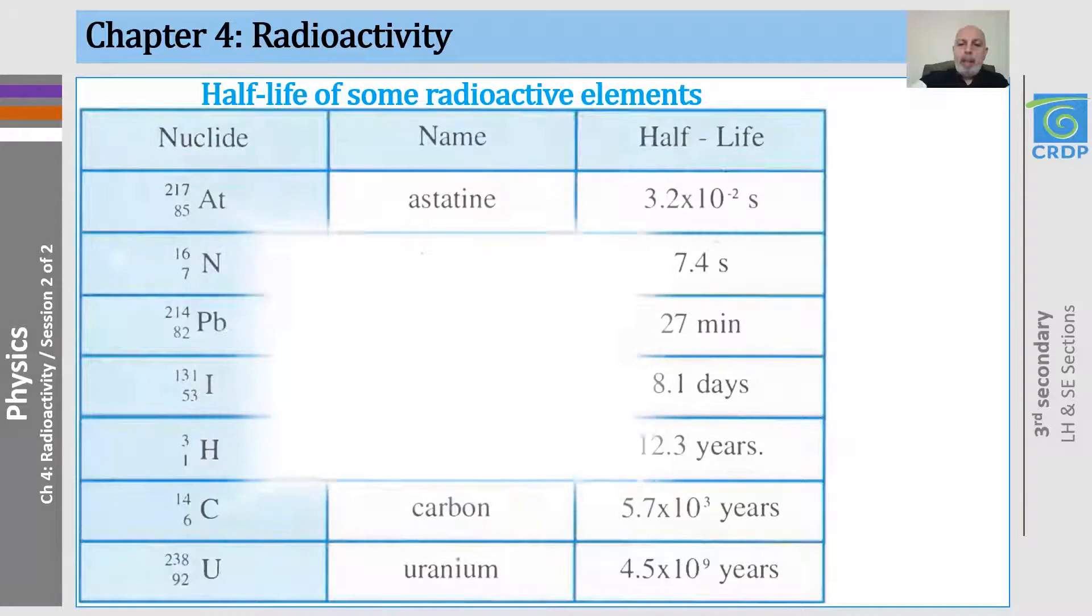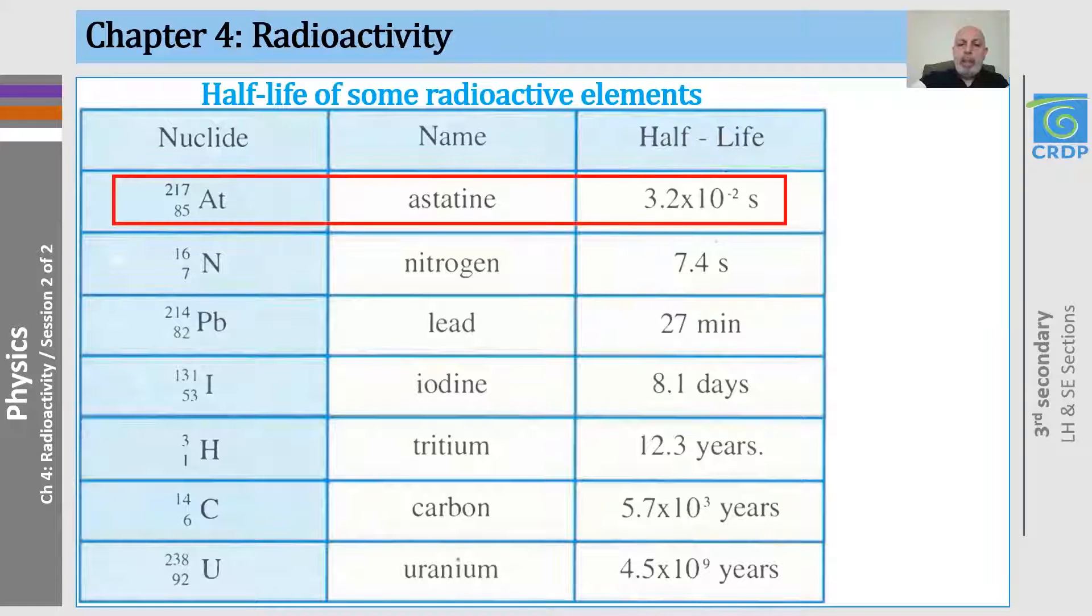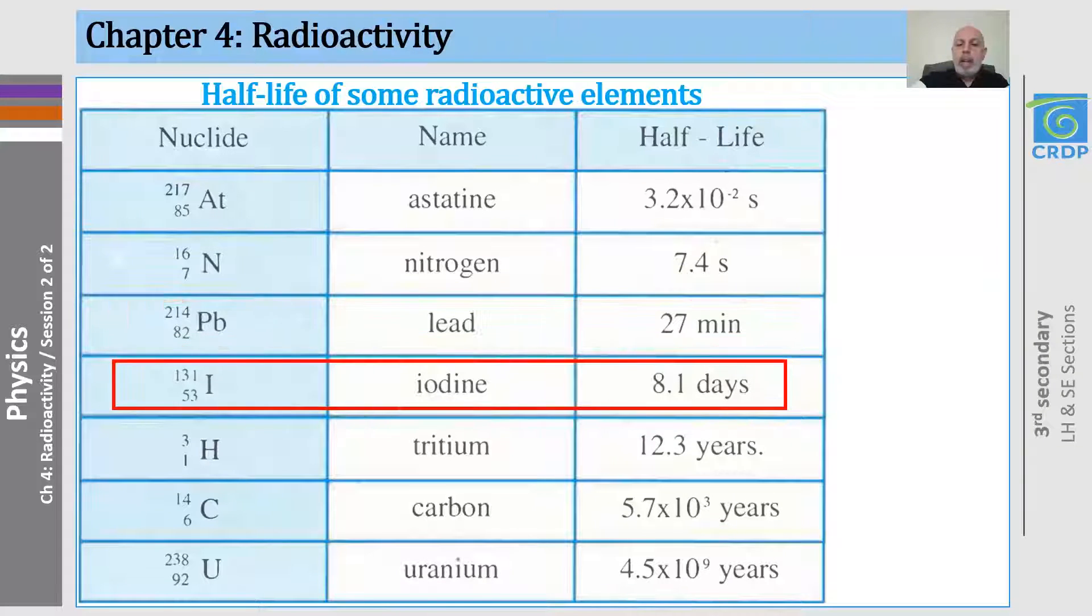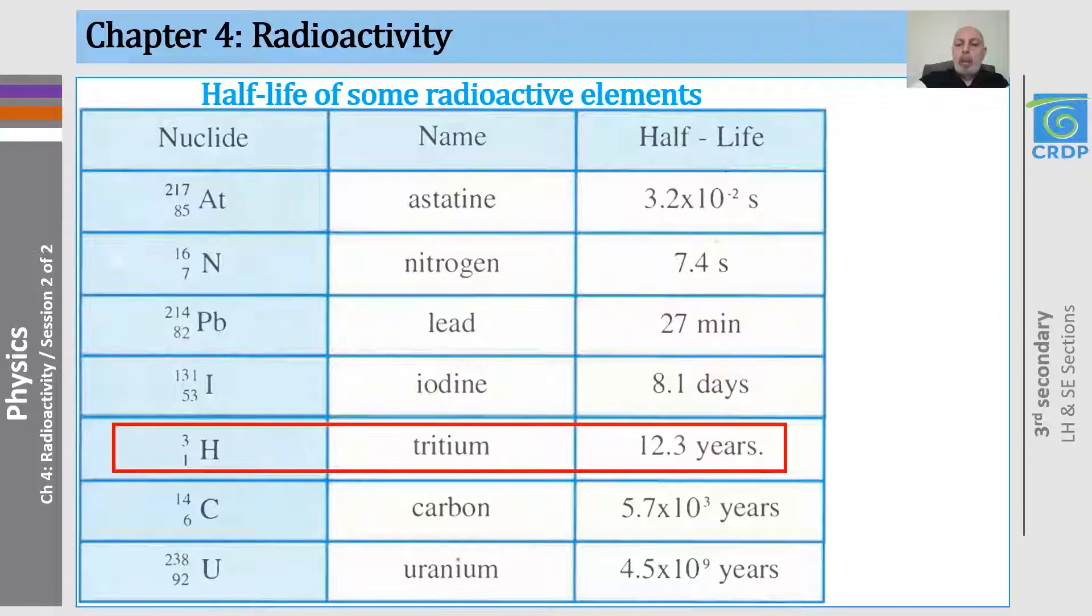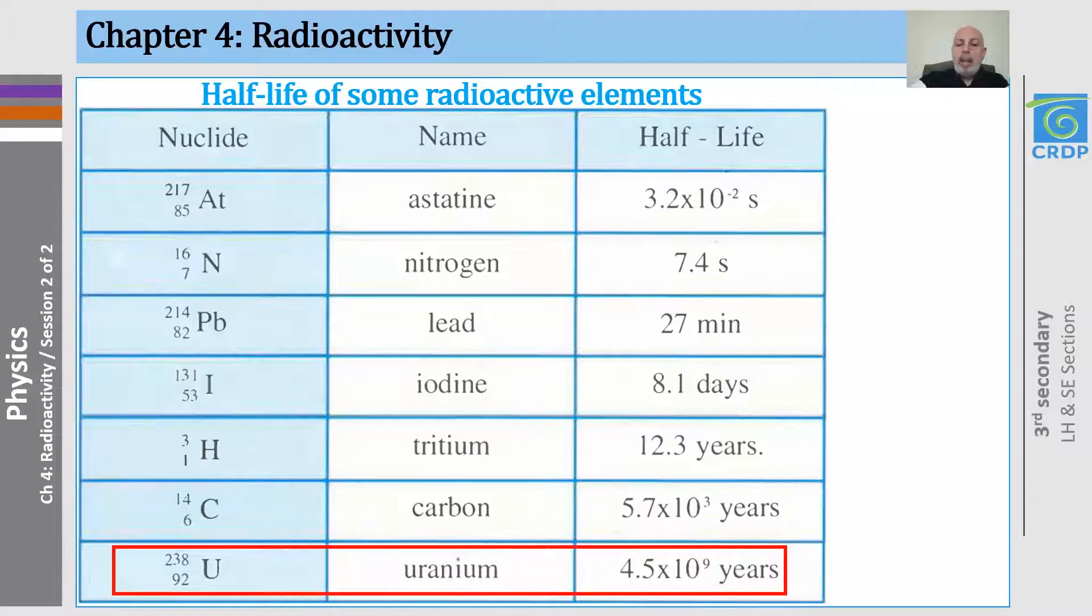Now, let me give you an example about some half-lives going from the shortest to the longest, starting with the astatine 217, which has a half-life of 3.2 times 10 to the minus 2 seconds, going to 7.4 seconds for the nitrogen and 27 minutes for the lead, 8 days for the iodine and 12 years for the tritium, then 5.7 thousand years for the carbon-14, and ending with 4.5 billions of years for the uranium-238.